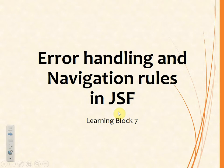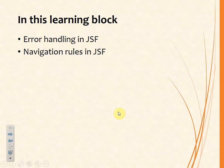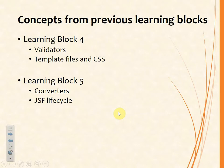Today we're going to take a look at error handling and navigation rules. These ideas are going to be built on what we've done already in terms of learning block 4 and learning block 5. Validators are used to make sure that converted values are in the correct range and that they meet the business rules.